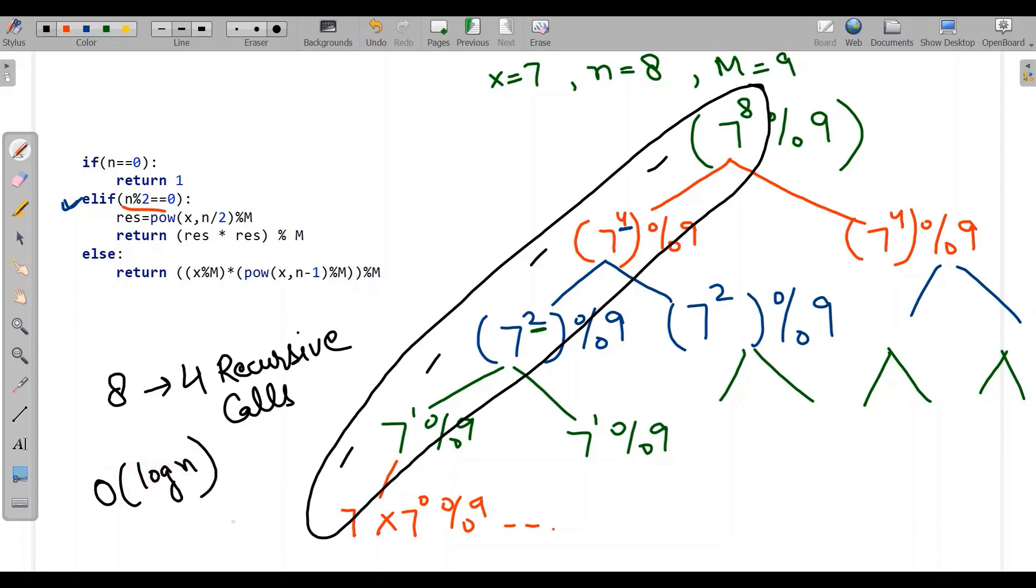Though we will discuss this in an elaborative way, for this, time complexity is order of log n. So this gives us a recursive Python program to calculate x to the power n mod M. Time complexity is order of log n which is quite efficient.